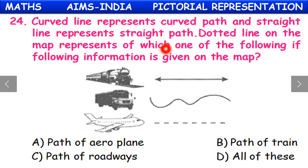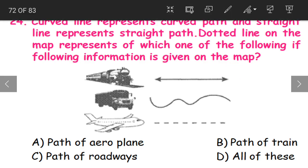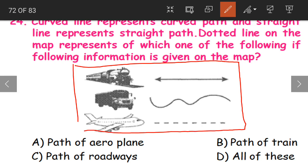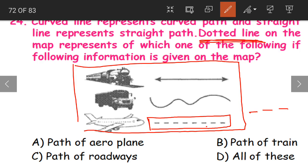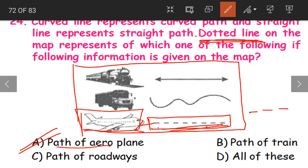Question 24. A curved line represents a curved path and a straight line represents a straight path. A dotted line on the map represents which of the following? Looking at the map, the dotted line — dots, dots, dots — has an aeroplane on its left side. So the dotted line represents the path of the aeroplane. Option A is the correct answer.